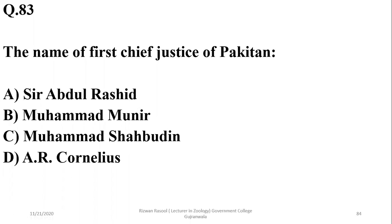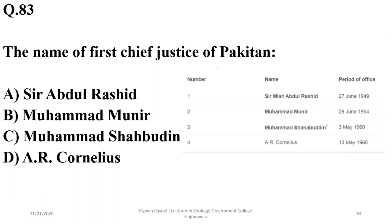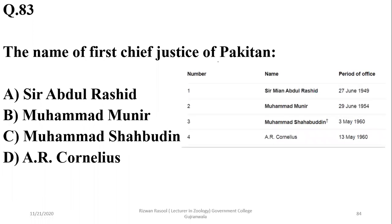The name of the first Chief Justice of Pakistan was Sir Abdul Rashid — Sir Mian Abdul Rashid was the first Chief Justice. The second Chief Justice was Mr. Muhammad Munir, and the third was Muhammad Shahabuddin.